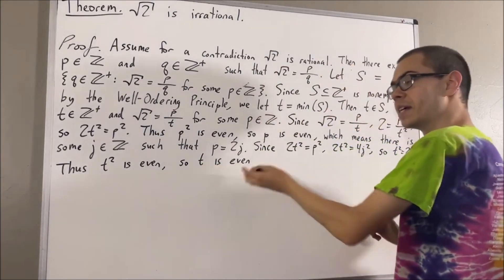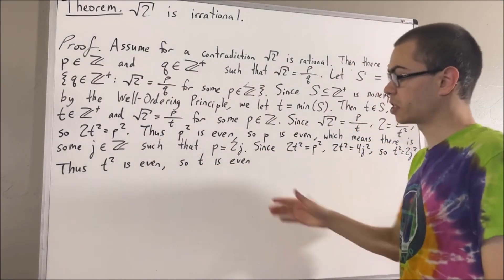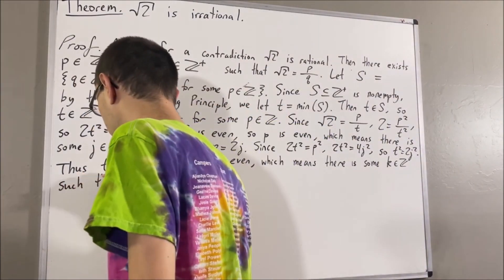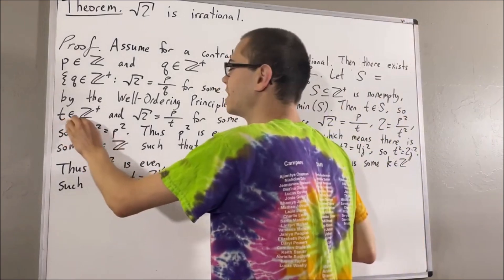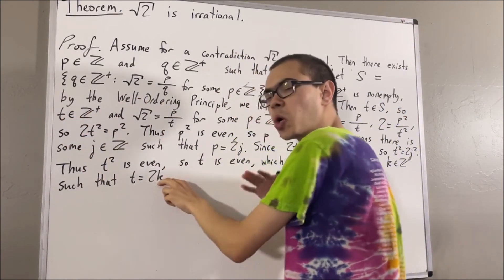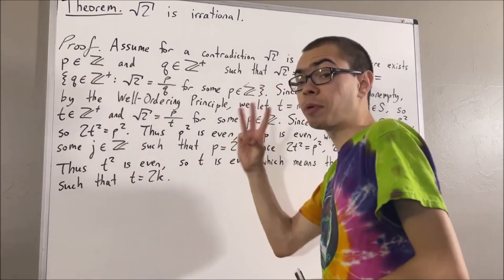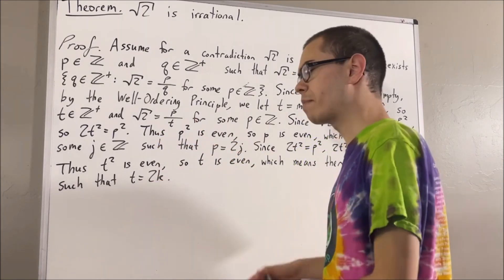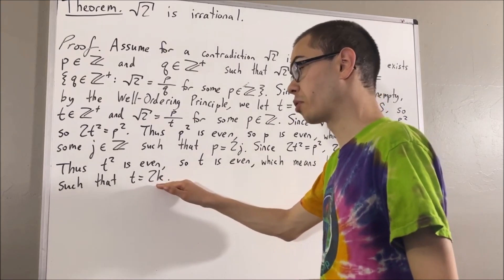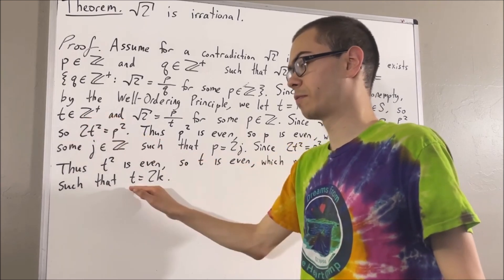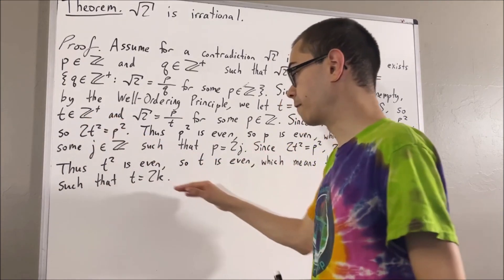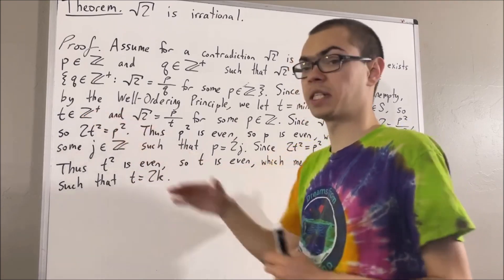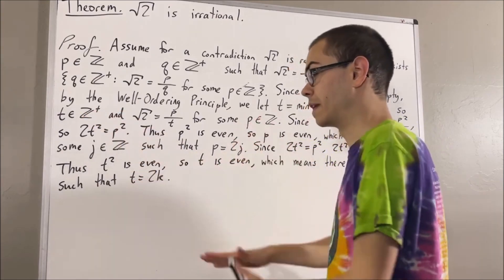What does it mean for t to be even? It means that there is some integer k such that t is equal to two k. Now, since t is a positive integer, we must have that k is also a positive integer. The reason why is there are three possibilities: either k is positive, k is negative, or k is zero. If k is zero, then we have two times zero, which is zero, but we know that t is positive — so that's a contradiction. On the other hand, if k is negative, we have two times a negative number, which results in a negative number, but again that contradicts the fact that t is positive. So the only possibility we're left with is that k is positive.